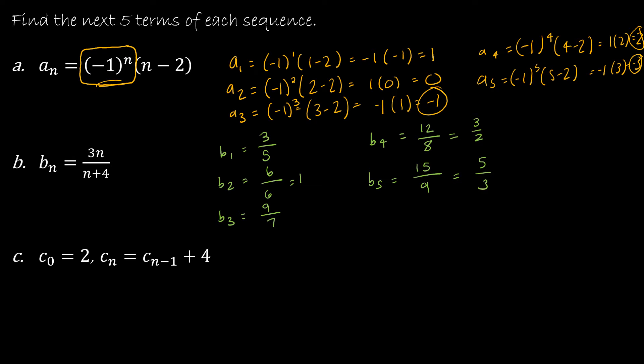The last one is a little bit different. Both of the other examples essentially gave you a function — I could have written this as f of x equals negative 1 to the x times x minus 2. This is a recursive definition, and as I can see, they're giving me a value to begin with. Then they're saying: to find each subsequent value, take the value before and add 4.